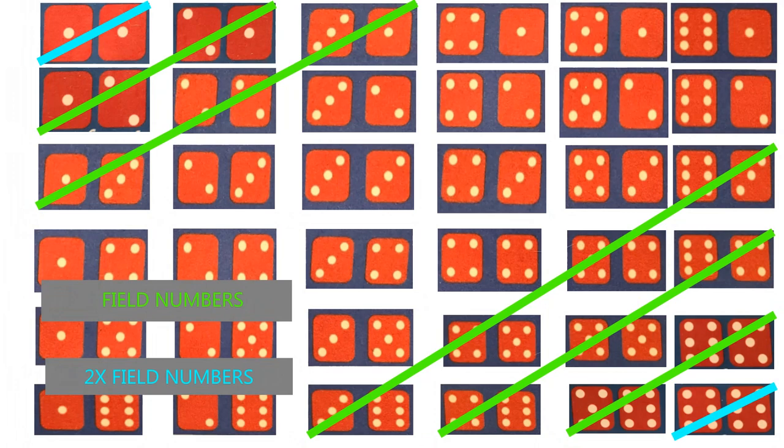A very popular bet belonging to a couple of systems — the iron cross comes to mind — and also played by many lesser experienced craps players because it's easy and accessible, is the field. When you bet on the field, it's a one-time roll and you win on the two, three, four, nine, ten, eleven, and twelve. If you roll a two or twelve, you get two times your bet. In some places, the twelve is actually three times.